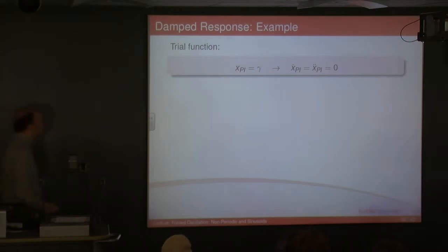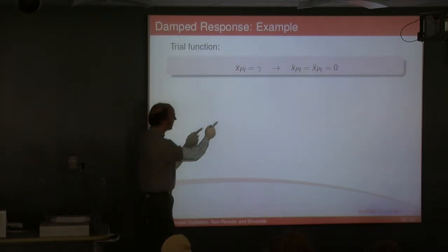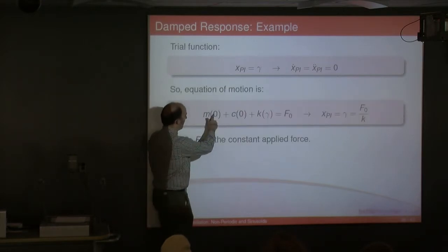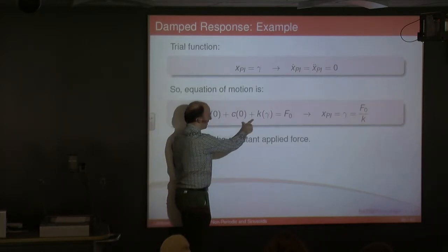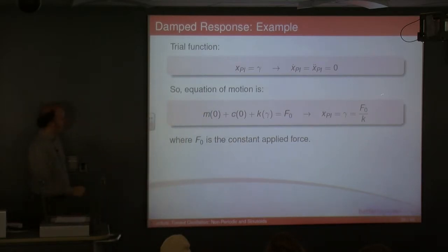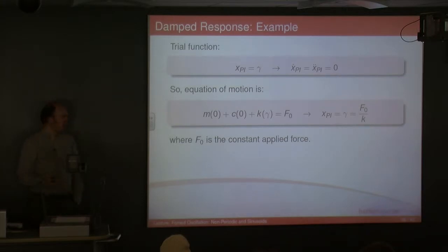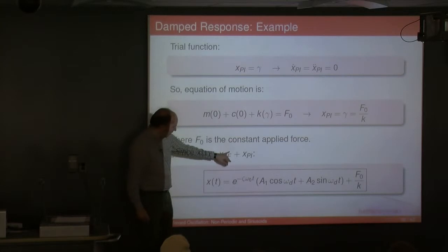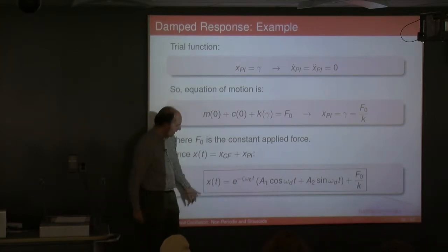x-dot-pi and x-double-dot-pi are zero, so obviously that's quite nice. We plug that into our equation: we get m times zero, plus c times zero, plus k times gamma. It's quite clear that x_pi = gamma = F₀/k, as we had before. So our general solution is our complementary function plus x_pi.